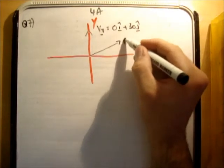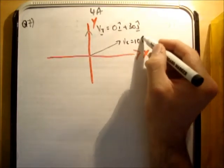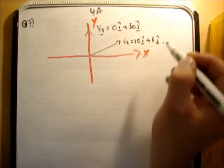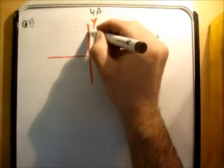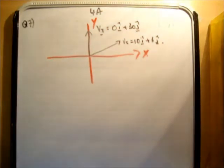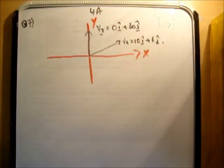One sec. So vc, 10i hat plus 6j hat. And what we're asked to find out is the magnitude and direction of the car's velocity as it appears from a person sitting on the train, as it appears. So as I've said before plenty of times.